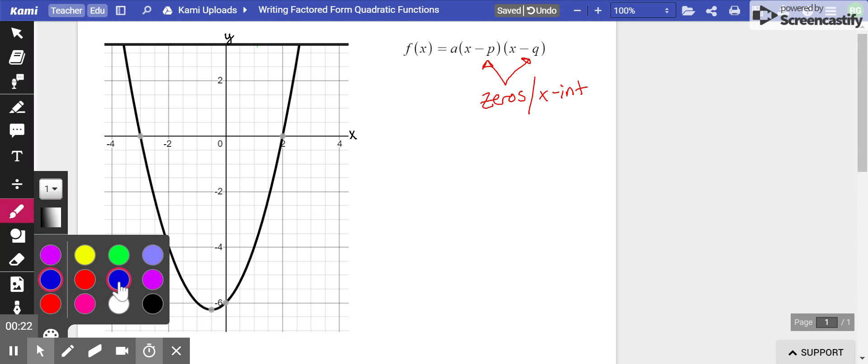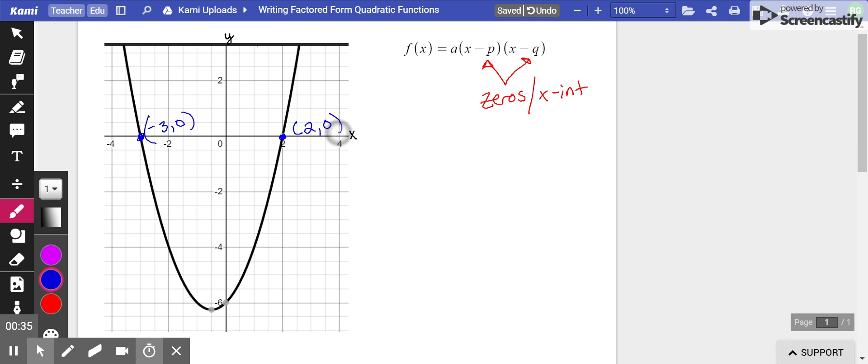So the first thing you need to do is figure out where on the graph the quadratic equation, the parabola, crosses the x-axis. And it crosses in two places, right here at negative 3, 0, and here at 2, 0. So we have two zeros or two x-intercepts.